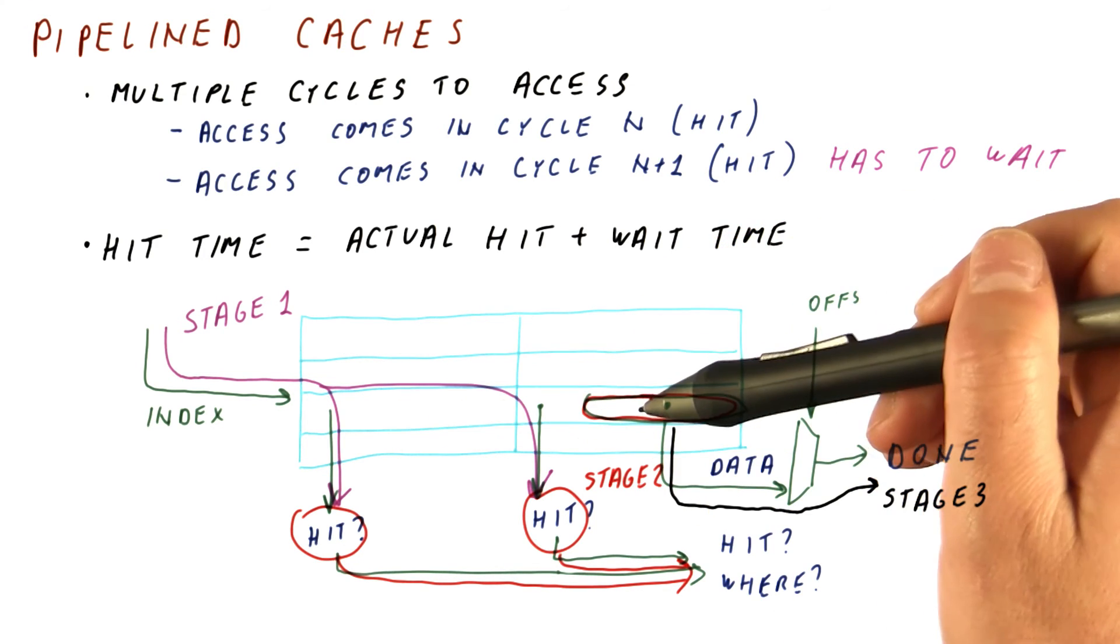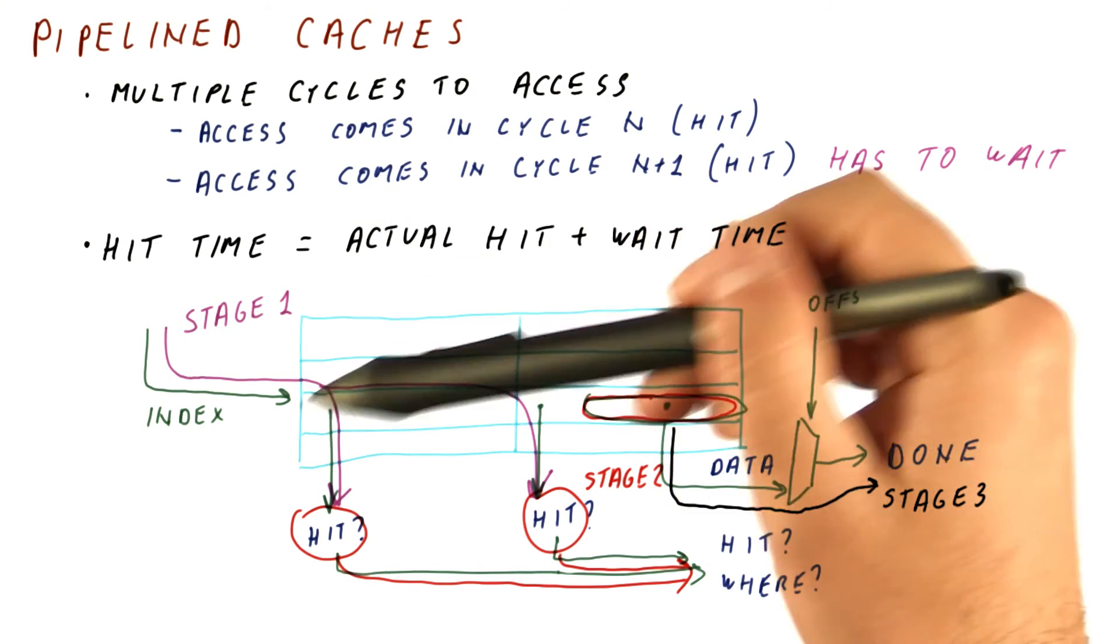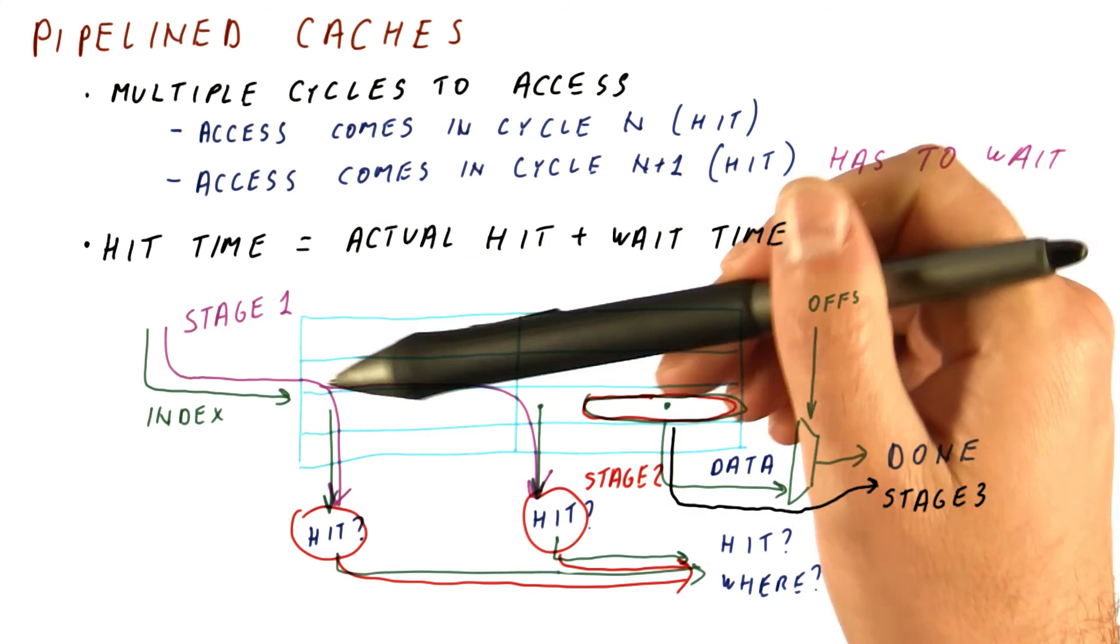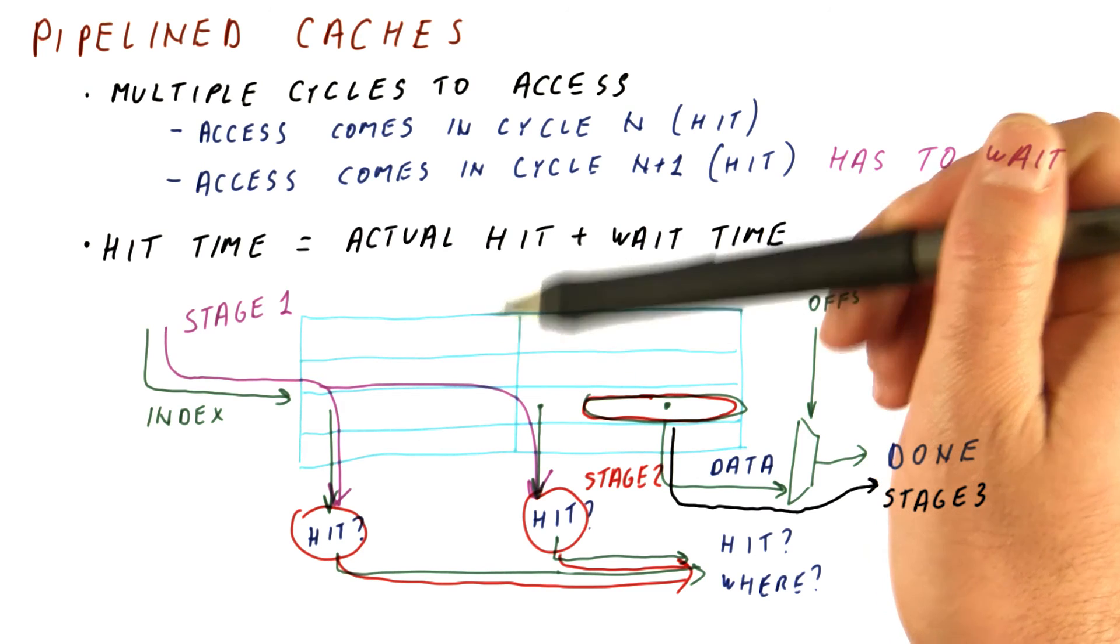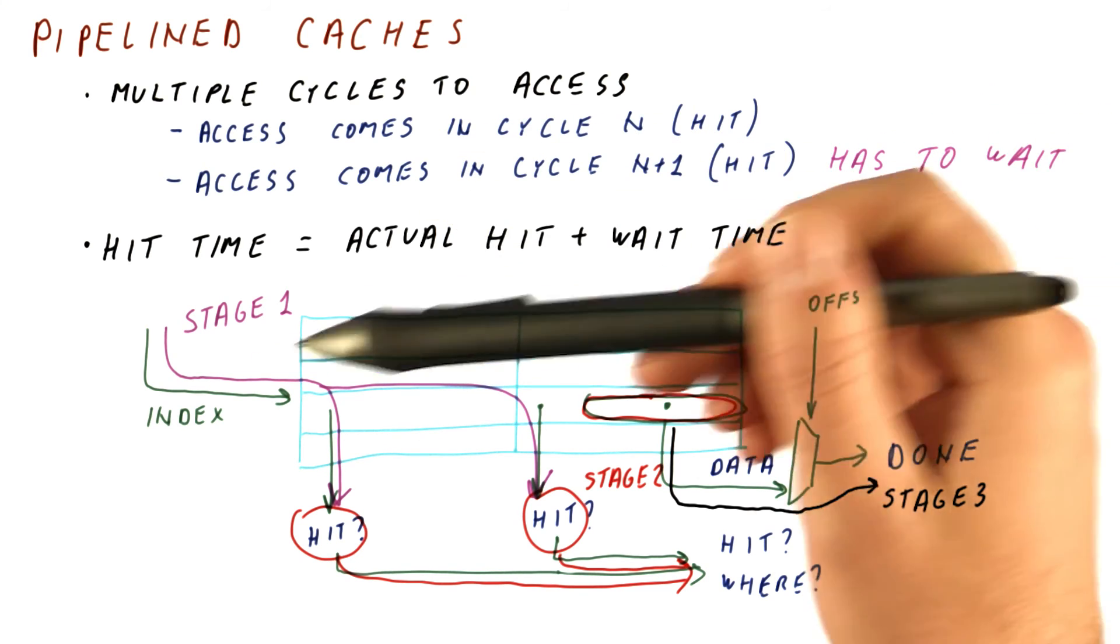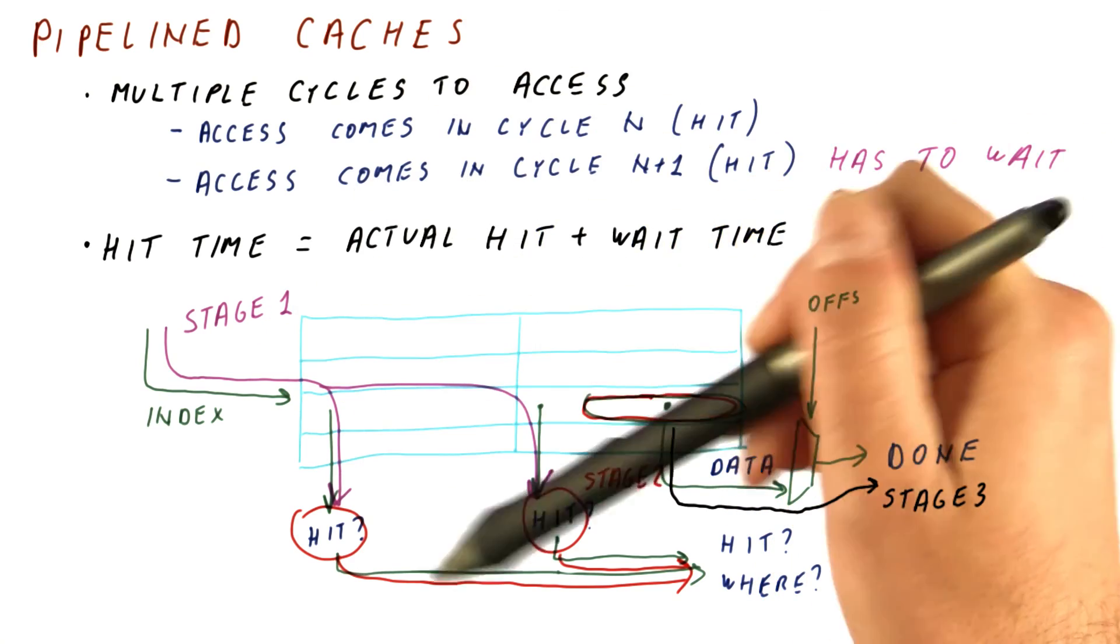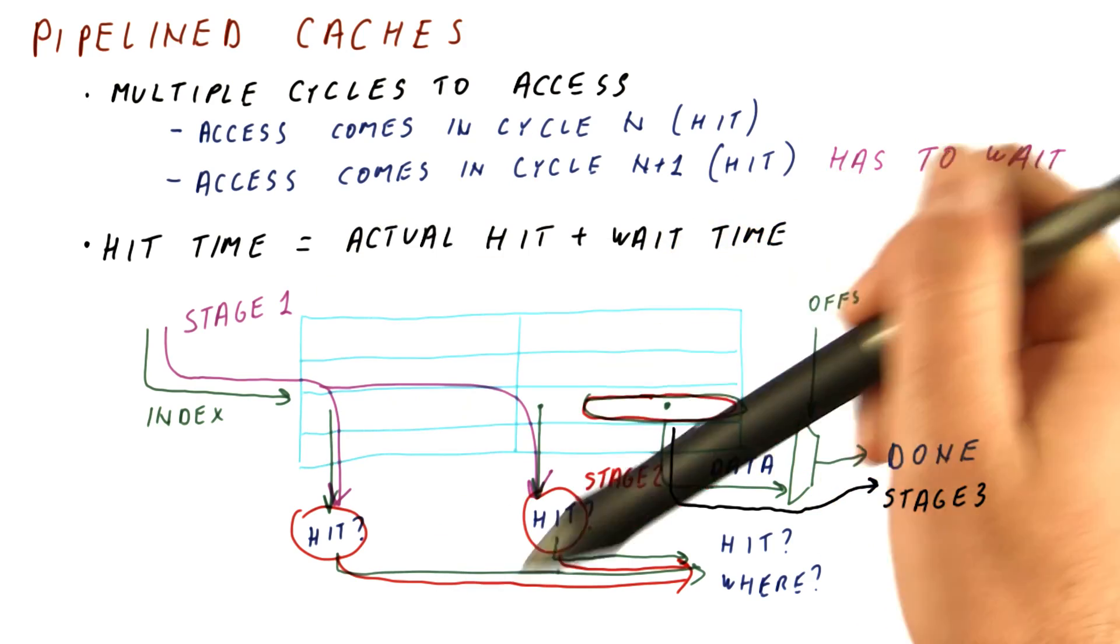In that case, just those two can be separate stages. Usually, the actual cache hit time for level one caches will be one, two, or three cycles. One cycle caches don't need pipelining, and two and three cycle caches can be relatively easily pipelined into two or three stages. So usually, level one caches will be pipelined.